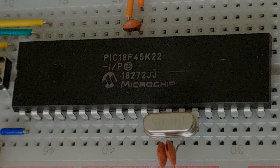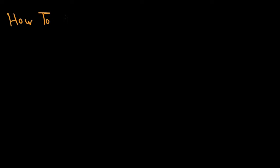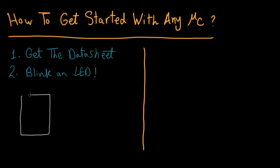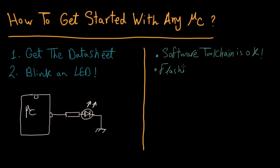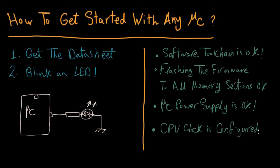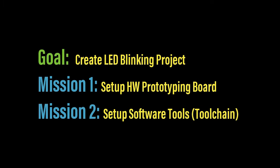How do you get started with any microcontroller? Number one: get the datasheet. Number two: create an LED blinking project. If you can get a microcontroller to blink an LED, you can program it to do whatever you want. The LED blinking project verifies that the software toolchain works, the flashing process is correct, firmware loads to all memory sections properly, the power supply section works on your test board, and the CPU clock and PLL configurations are running correctly.